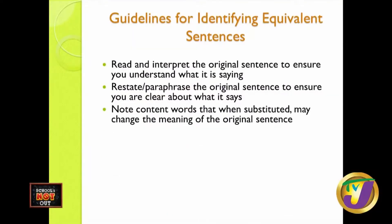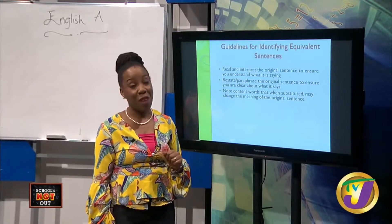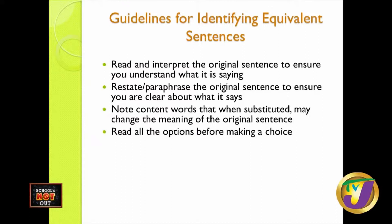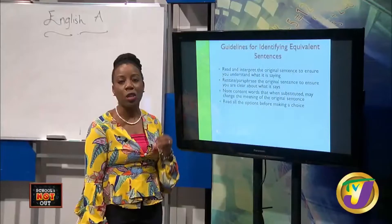Third guideline: note content words that when substituted may change the meaning of the original sentence. Identify outstanding or main words and begin to preempt what other constructions you might get in options A, B, C, or D — prepare your mind for how the examiners might have changed the meaning. Fourth guideline: read all the options before making a choice. Do not get to A, think it sounds right, and select it without knowing what B, C, or D says — you may very well be wrong.